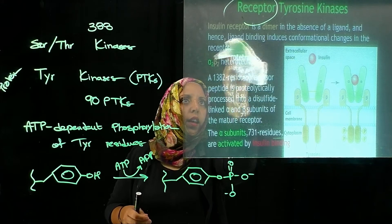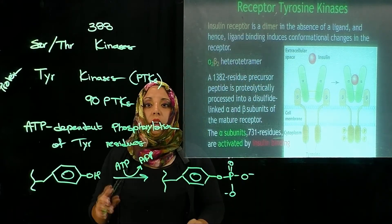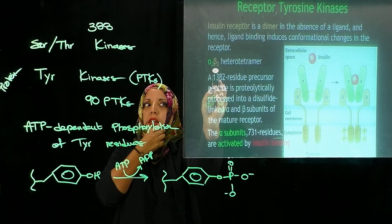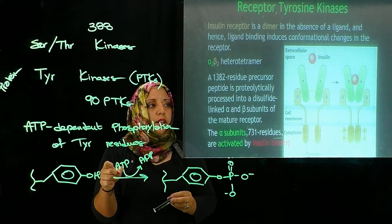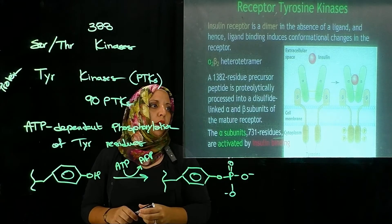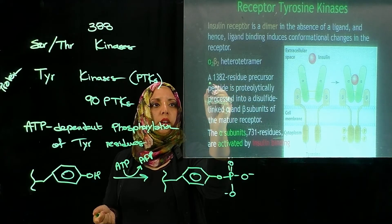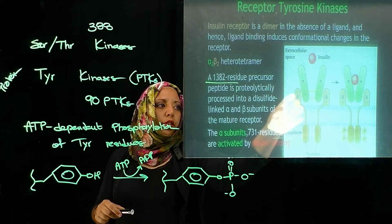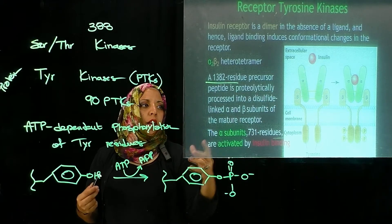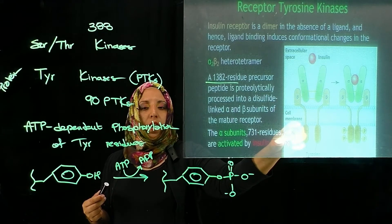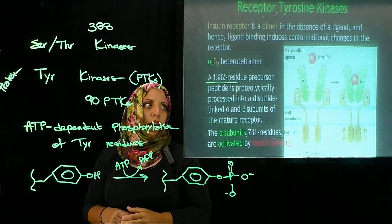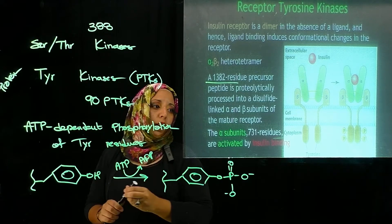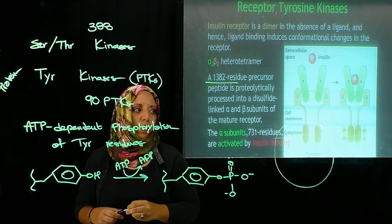Now let's take a look at the insulin receptor. While we said receptors are typically monomers that dimerize upon ligand binding, the insulin receptor is an exception — it is an alpha-beta protomer, or an alpha-2 beta-2 heterotetramer. It does dimerize once the ligand is bound, but on its own it is an alpha-beta protomer. It is proteolytically cleaved from a 138-residue precursor peptide. The beta subunit is embedded within the membrane, while the alpha subunit is entirely in the extracellular space, and the protein tyrosine kinase activity is within the cytoplasmic end of the membrane.